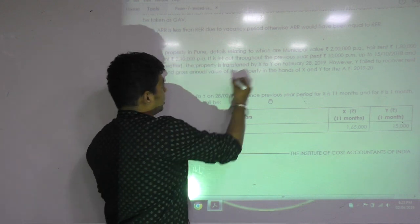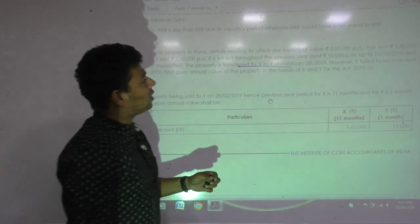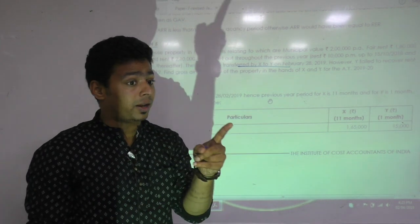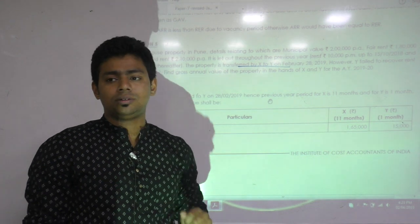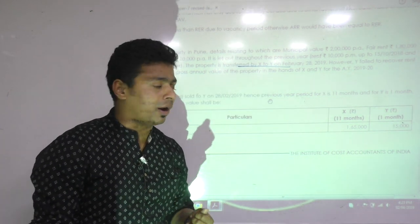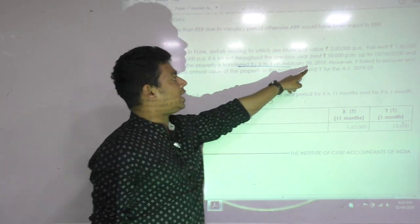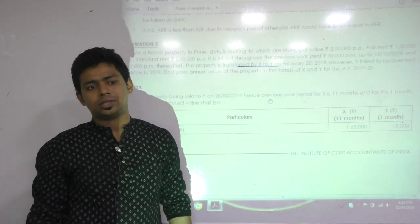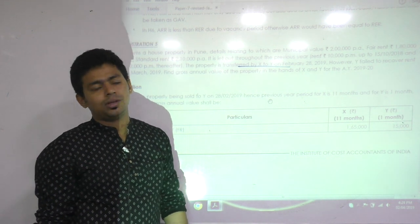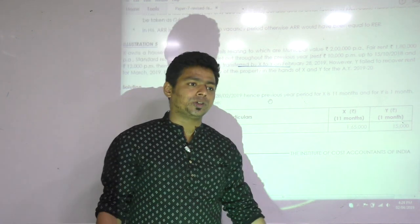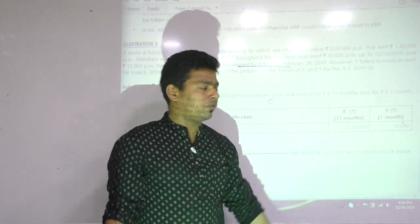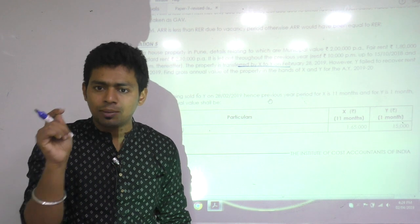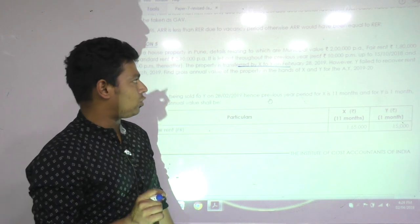This is the exceptional case. Property transferred by X to Y on sale. Sale and buy - now both will become owner, we have to apply proportionate number. X to Y on Feb 20th, 2019, that means last day of Feb. For how many months was X the owner? 11 months. How many months is Y the owner? One month. So time ratio - we will apply time ratio.